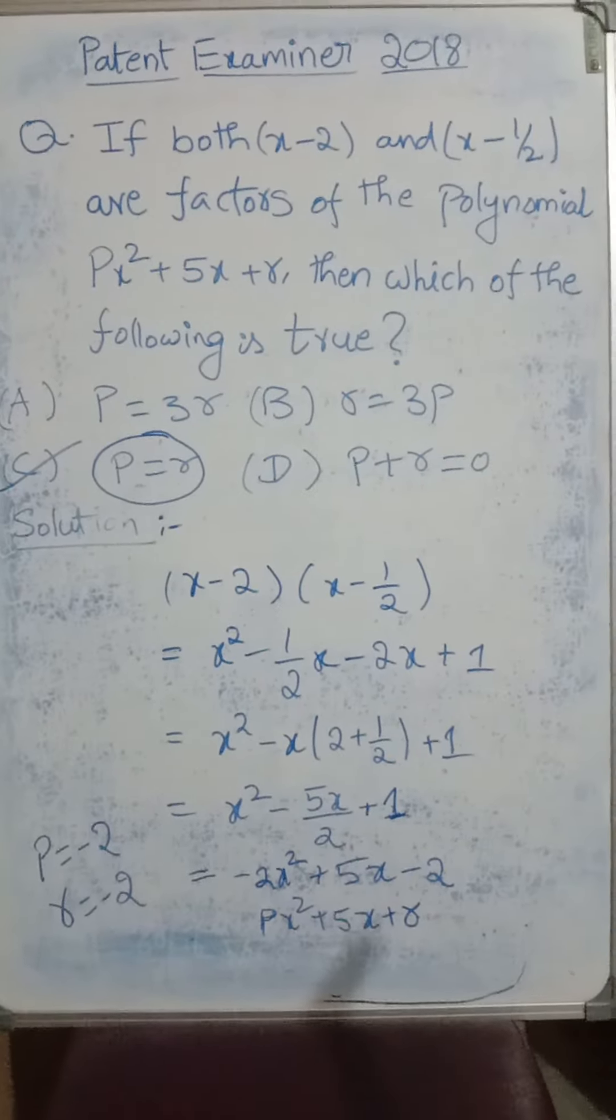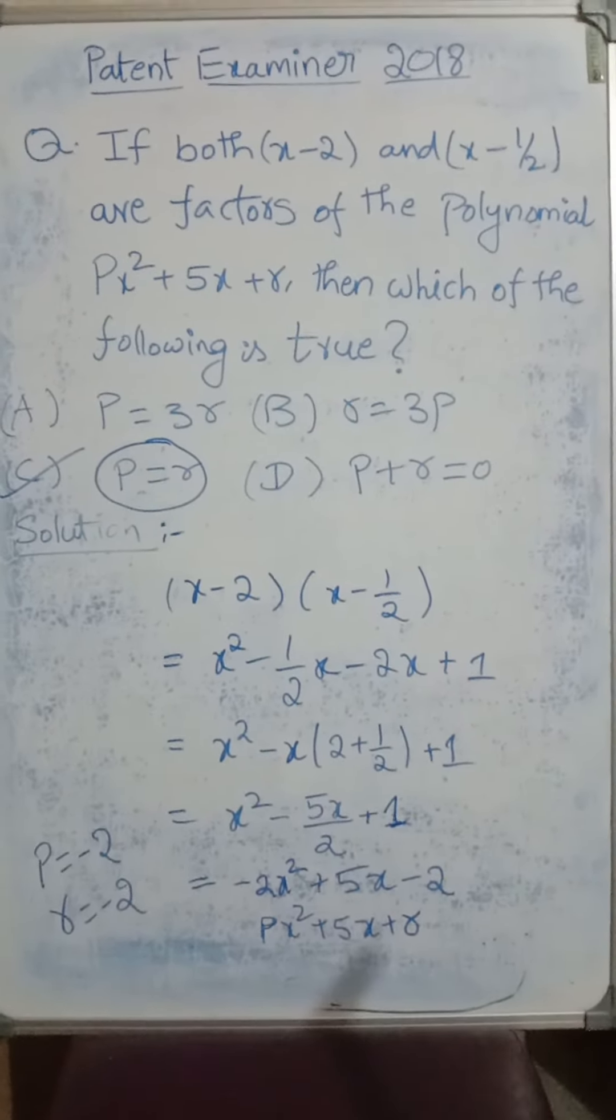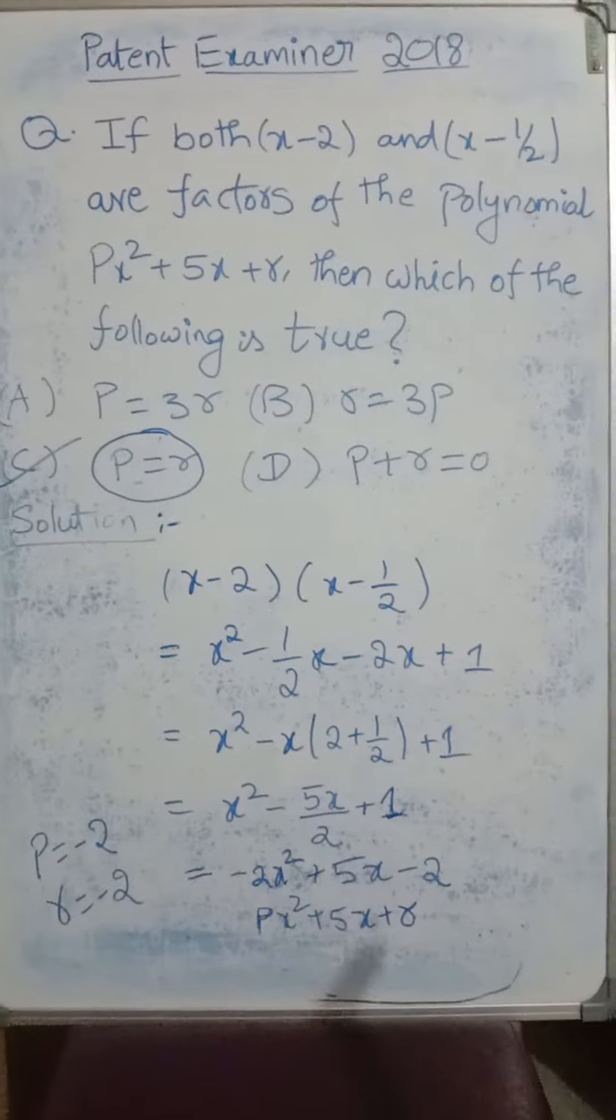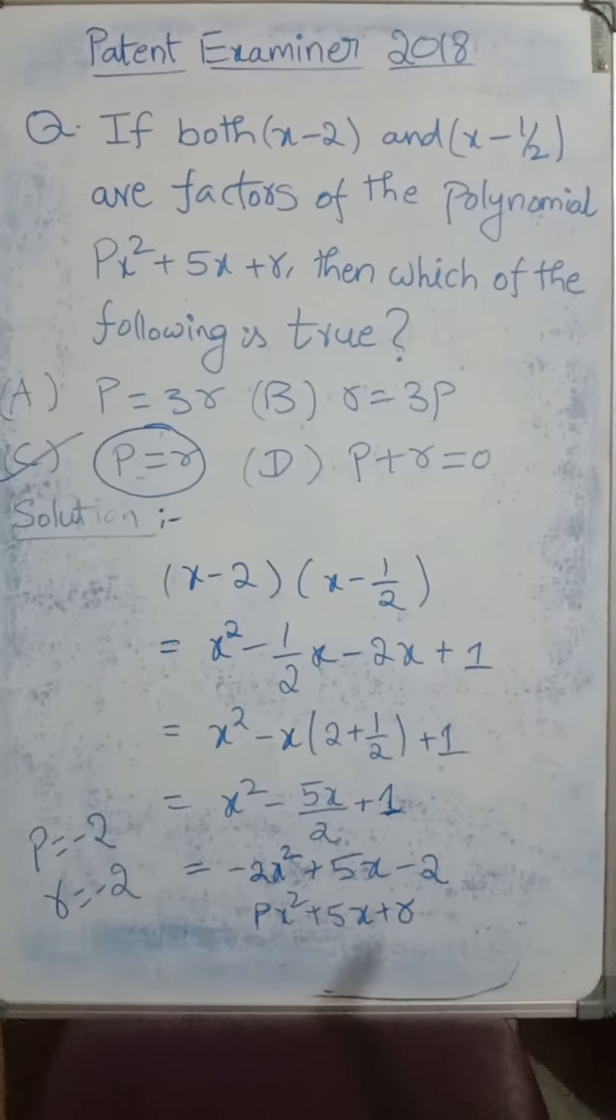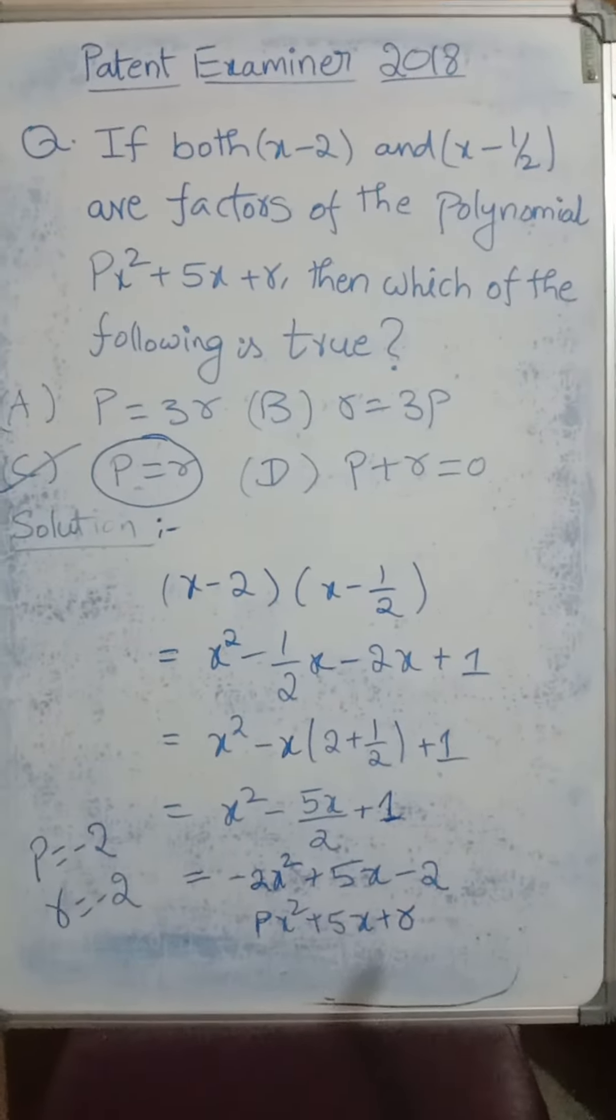If both x minus 2 and x minus 1 by 2 are factors of the polynomial px square plus 5x plus r, then which of the following is true?